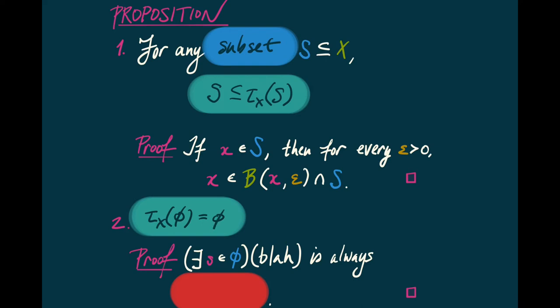The second key property: when we form the closure of the empty set, we get the empty set again — nothing happens when we close up the empty set. Why? Because unpacking the closure operator applied to the empty set, you encounter a sentence of the form 'there exists an s in the empty set such that something.' In logic, any existentially quantified sentence about the empty set is always false, regardless of what 'something' is. Dually, a universally quantified sentence about the empty set is always true.